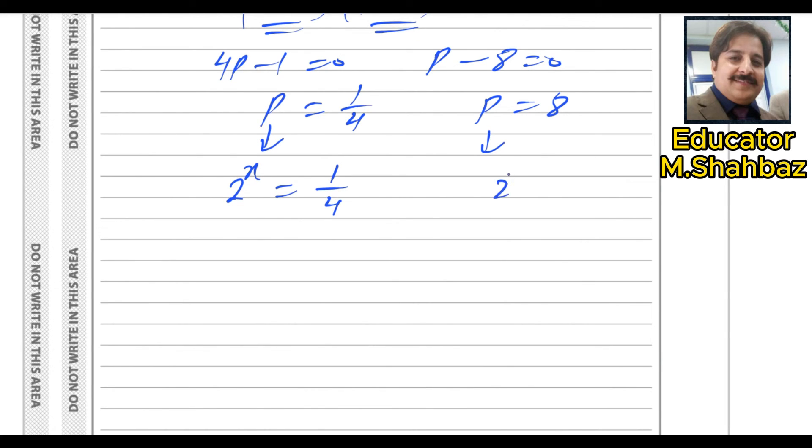And this p, 2 power x equals to 8. There are two methods to solve. One method by using logarithm and other method by making the same powers. Let me teach you both. Here I think you can write this way, 2 power minus 2. There is no difference. This is 2 power x equals to 2 power 3. Now the bases are same. The powers will be equal. Bases are same, powers will be equal. So x equals to minus 2 and x equals to 3. So these are two answers for this. Because bases are same, then powers will be equal.